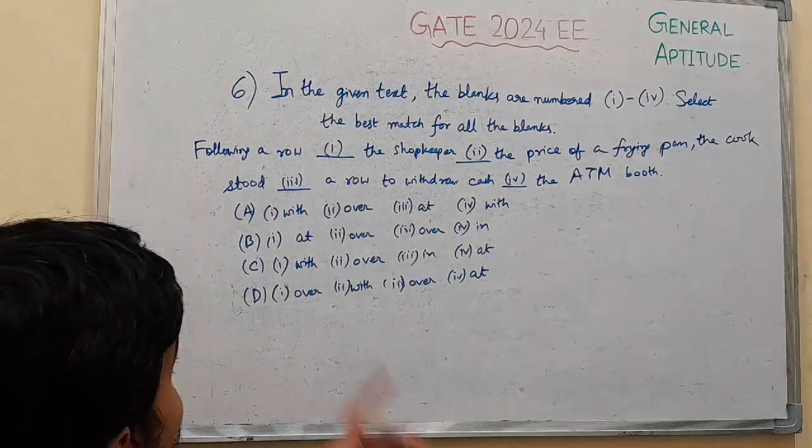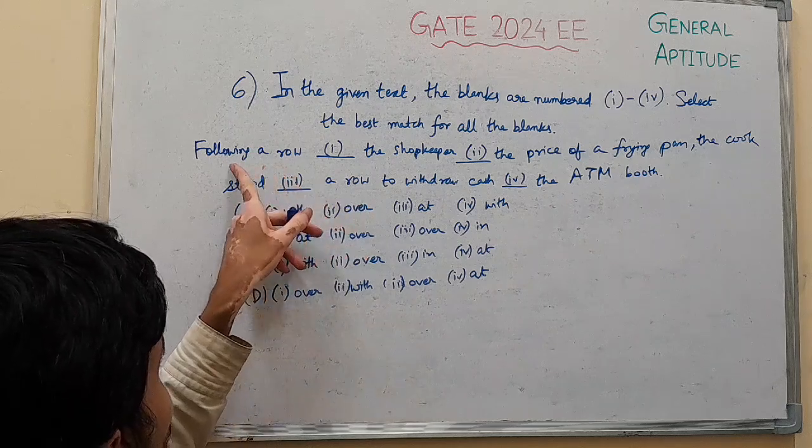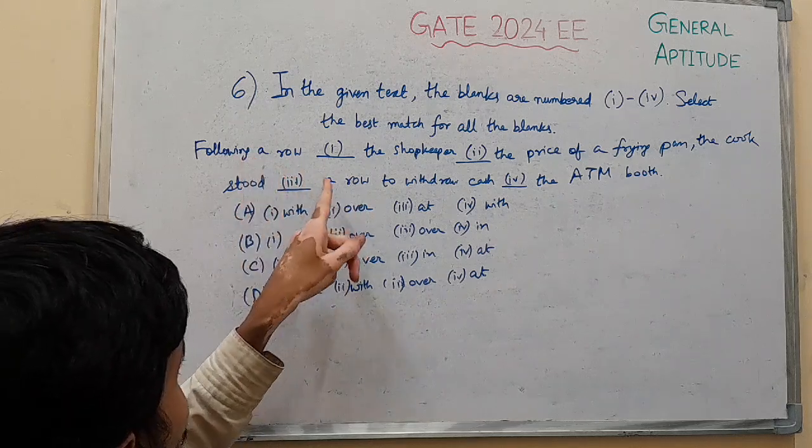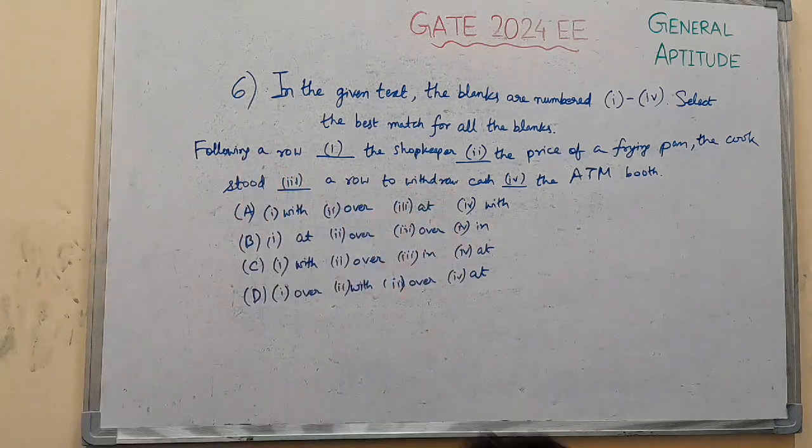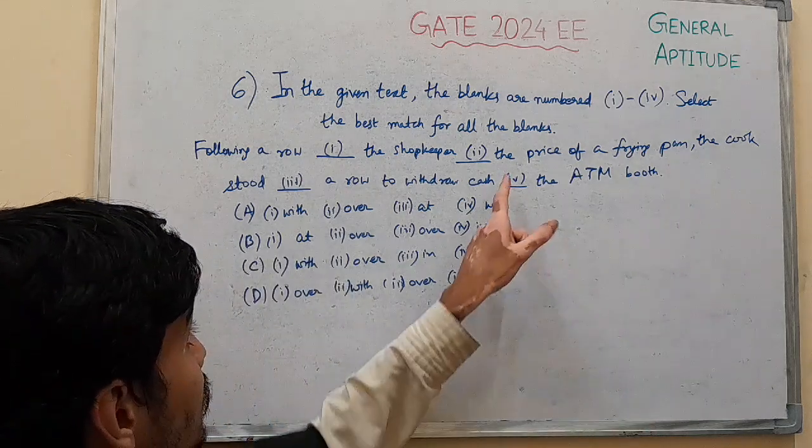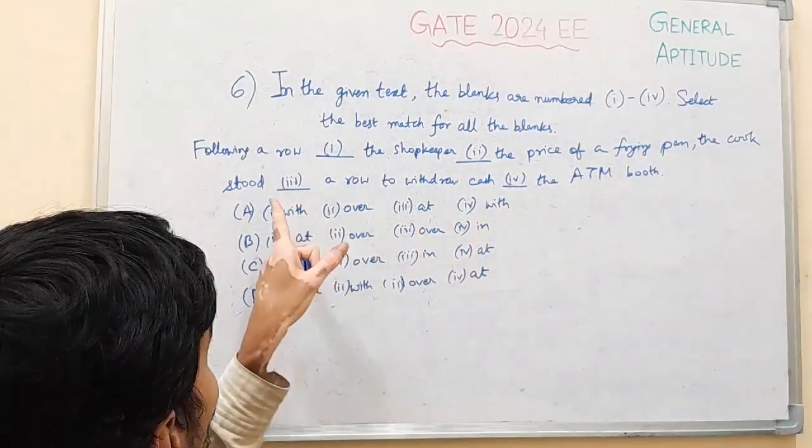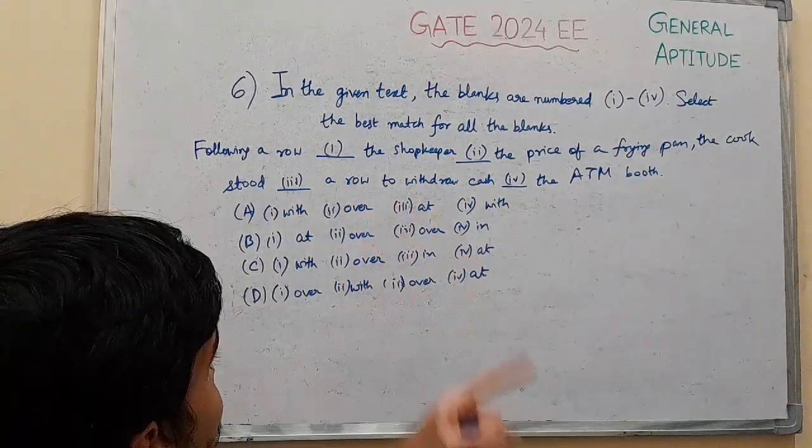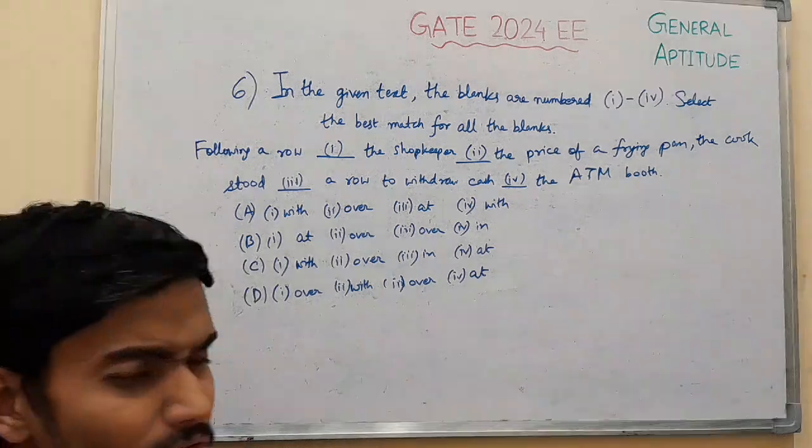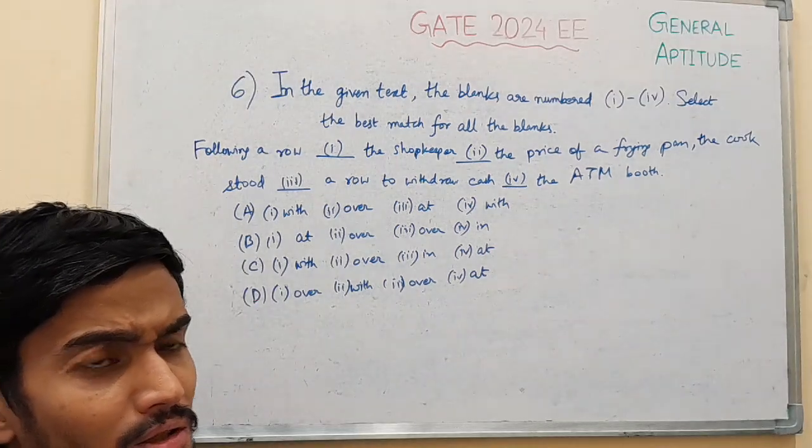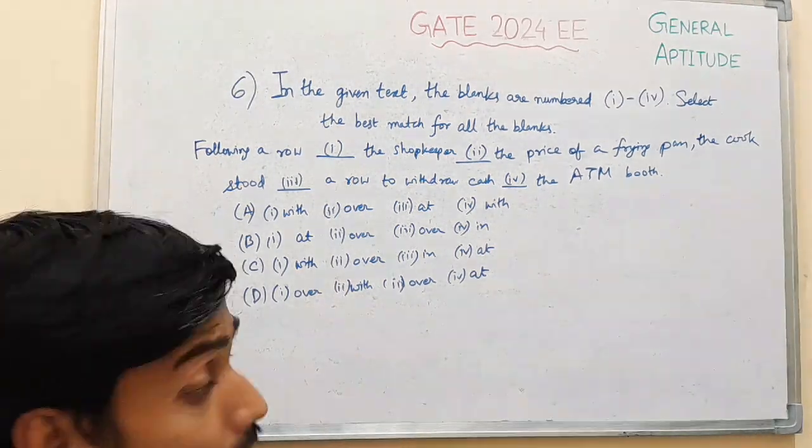So the sentence reads as: following a row with the shopkeeper over the price of a frying pan, the cook stood in a row to withdraw cash at the ATM booth. So to fill the blanks in the sentence with appropriate prepositions.